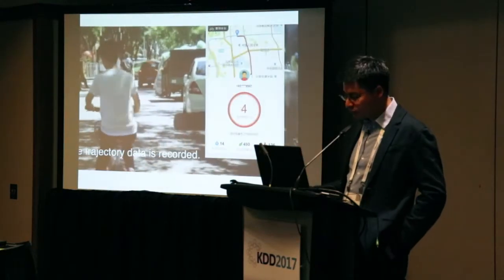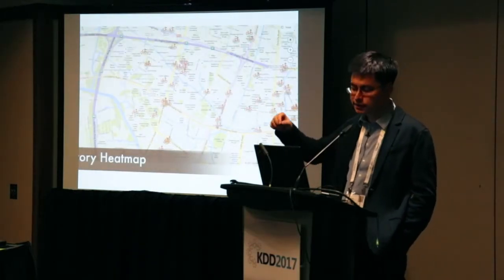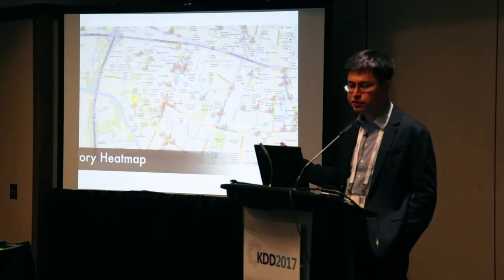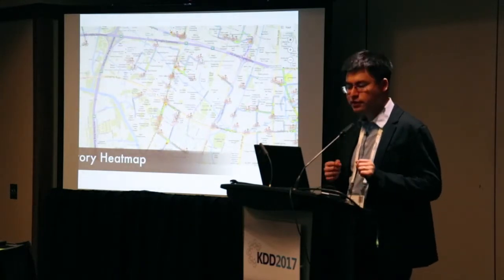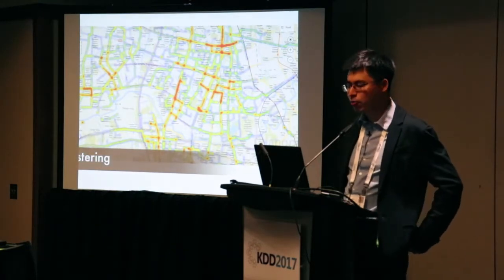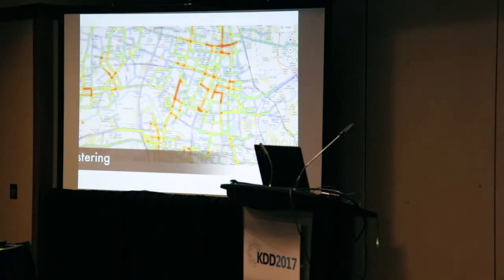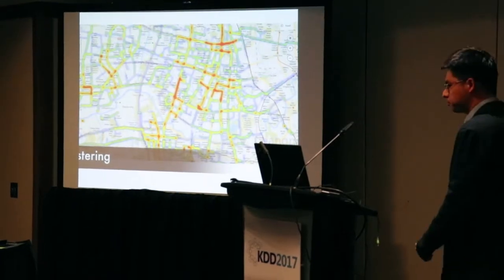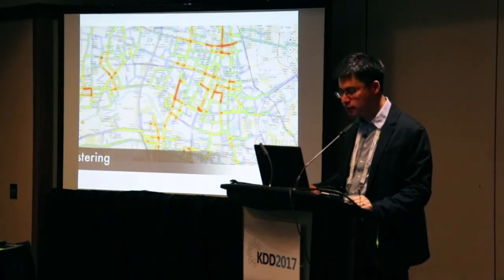Fortunately, the bike-sharing system provides not only riding demand but also trajectory data of riders — we know how people ride, through which lanes, their origin and destination. Based on this data, specifically MoBike trajectory data in Shanghai, we can better plan the bike lanes to reflect people's real requirements.